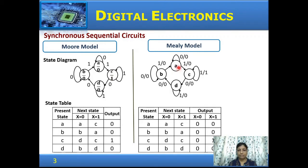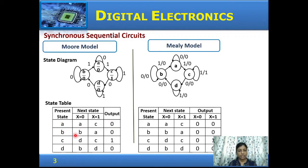Looking at the Mealy model — when the circuit is in state A with input 0, the output is 0 and the circuit remains in the same state. With input 1, the output is 0 and the circuit moves to state C. From the state table, the present states A, B, C, D are listed with next states for inputs X=0 and X=1. For present state A with input 0, the next state is A; with input 1, the next state is C. The output for state A is 0, and similarly for state B.